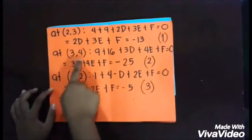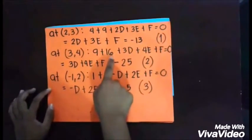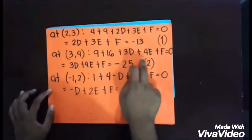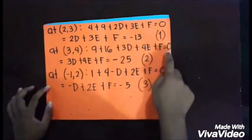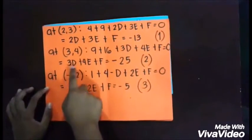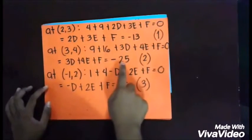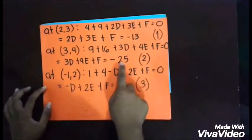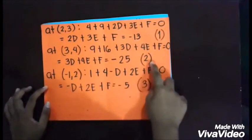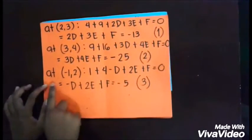At point (3, 4): 9 + 16 + 3d + 4e + f = 0, which gives 3d + 4e + f = -25. This is Equation 2.